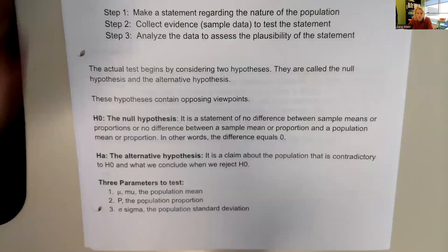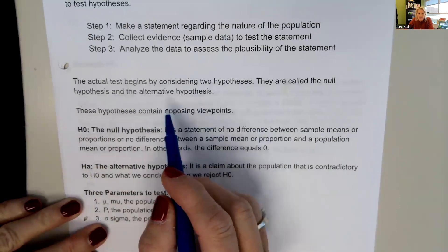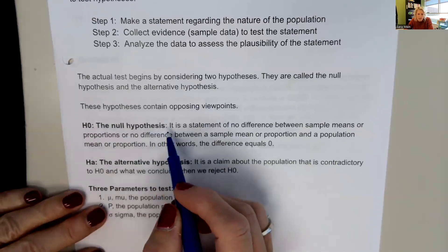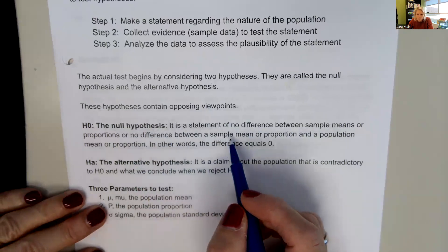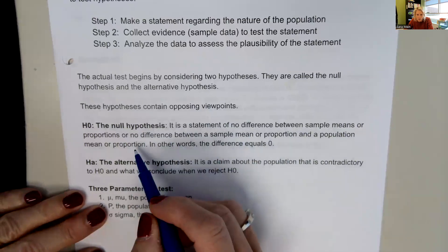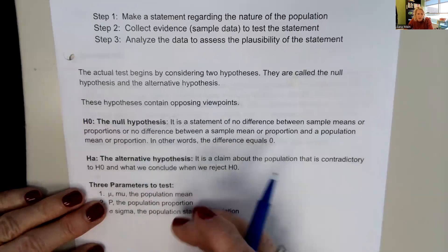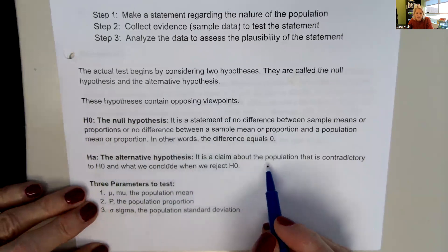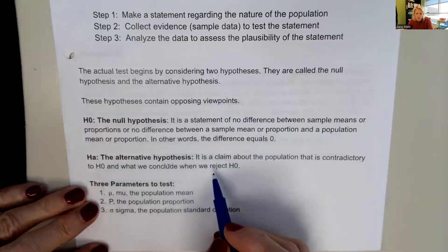The actual test begins by considering two hypotheses: the null hypothesis and the alternative hypothesis. These hypotheses contain opposing viewpoints. The null hypothesis is a statement of no difference between sample means or proportions, or no difference between a sample mean or proportion and a population mean or proportion — in other words, the difference equals zero. The alternative hypothesis, H_A, is a claim about the population that is contradictory to H0, and what we conclude when we reject H0.